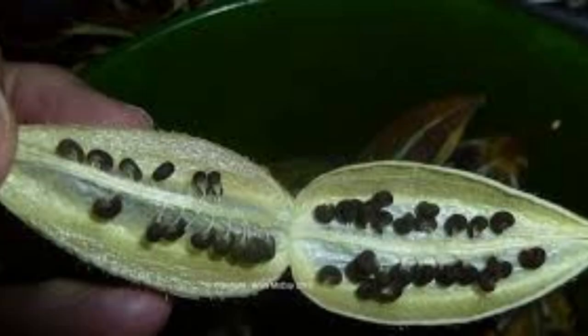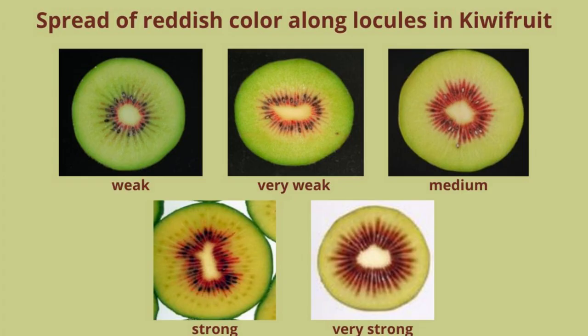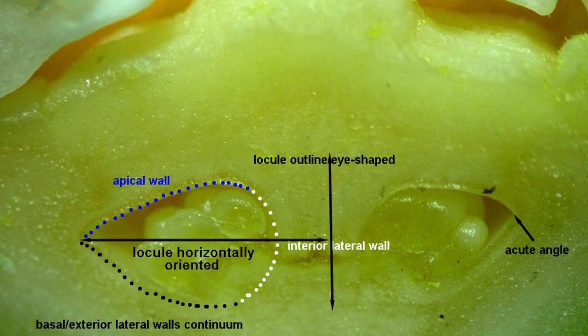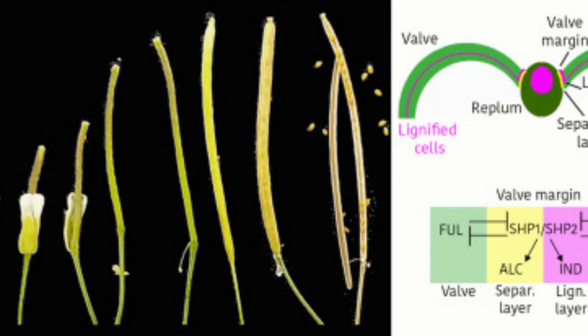There are various types of locules found in different plant structures, each with its own unique role and function. Some of the most common types include: anther locules, which are compartments found in the anthers of flowering plants used to produce and store pollen; ovary locules, found in the ovaries of some plant species where they serve as a site for the development of seeds; and fruit locules, which are fleshy compartments found in the fruit of some plant species used to store essential nutrients and energy sources.